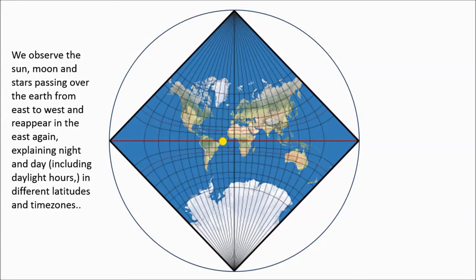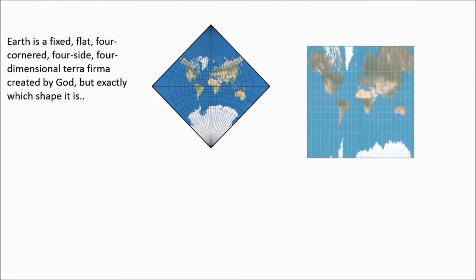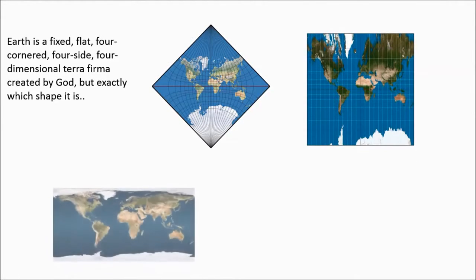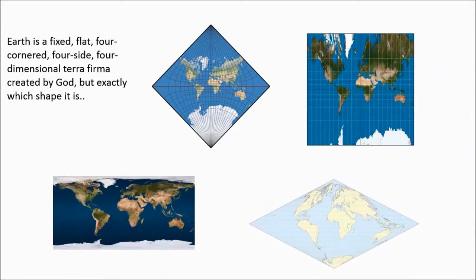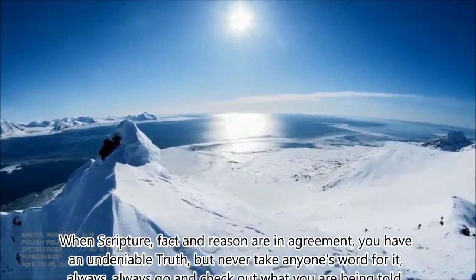I don't understand why more flat earthers aren't looking into it, aren't questioning the circle model the same as we did the ball model and seeing that we've got a far better model that explains far more observational realities and matches scripture perfectly. I don't understand why more people aren't on it but hopefully they will do in the future.